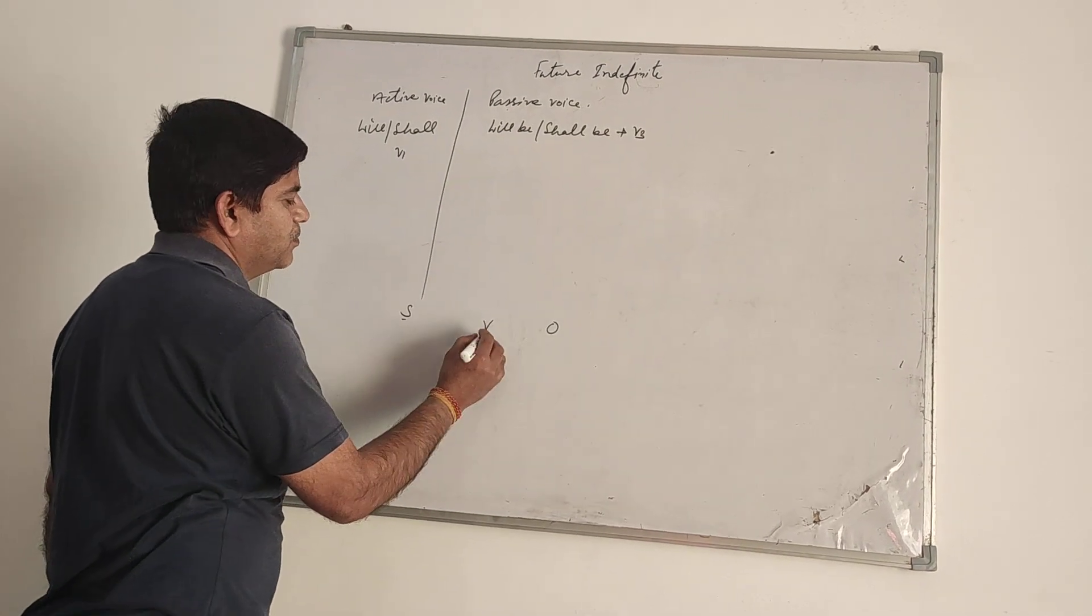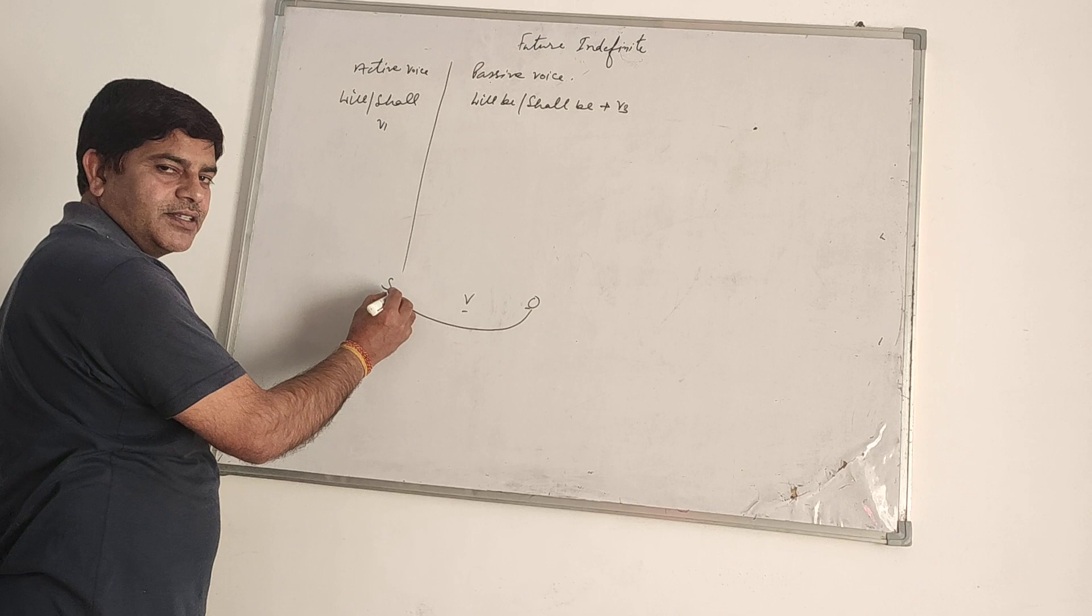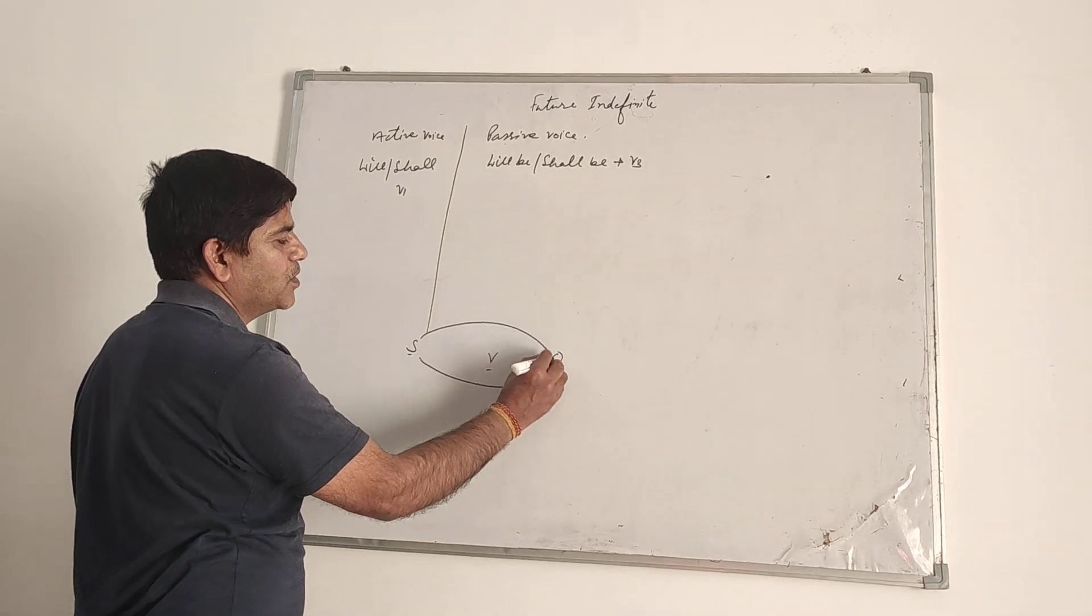As yesterday I have told you, we have three things: subject, verb, object. Object will take the place of subject and subject will take the place of object.